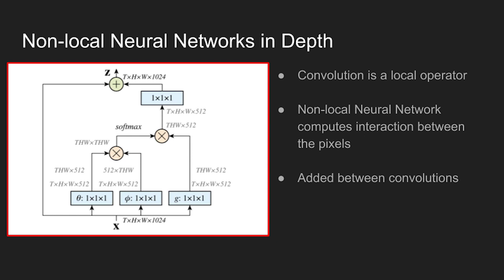As shown in the figure, if a block gets a feature size of t times h times w times 1024 as input, matrix reshaping, multiplication, and element-wise additions are performed to capture the global dependencies between the pixels, and outputs a feature map of the same size using one-by-one convolution.